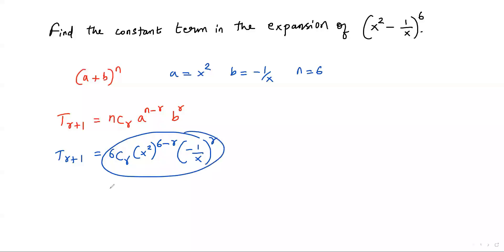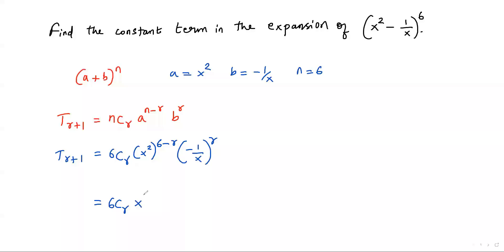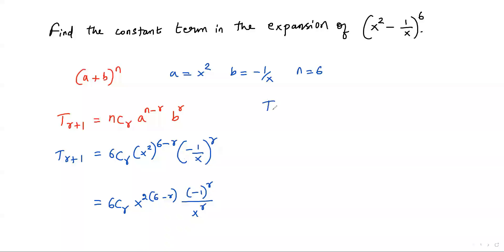To simplify, we have 6Cr. Here we have exponent 2 and exponent (6 minus r), so we multiply the two exponents to get 2 times (6 minus r). For the fraction, the common exponent r can be taken separately for numerator and denominator, giving negative 1 to the rth power over x to the rth power. So the (r+1)th term becomes 6Cr times x to the power (12 minus 2r) times negative 1 to the power r over x to the power r.